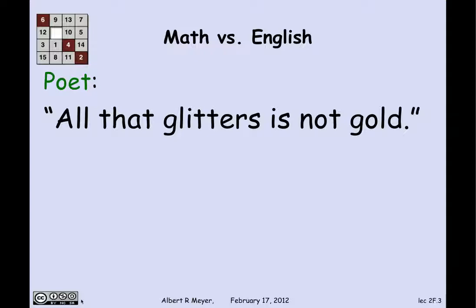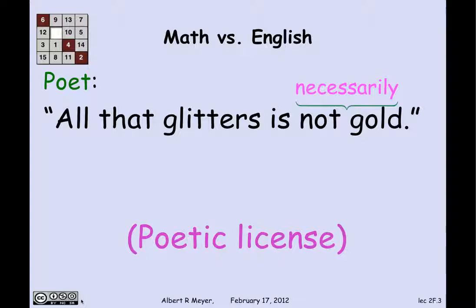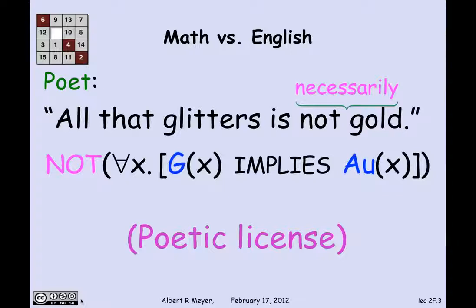What is actually meant? When the poet says "all that glitters is not gold," he's really leaving out a key word to be understood from context: "All that glitters is not necessarily gold." He's using poetic license — you're supposed to fill in and understand his meaning. The proper translation is that it is not true that everything that glitters is gold — it is not the case that for all x, if x glitters, then x is gold. It's an example where a literal translation, without thinking about what the sentence means and what the poet intended, gives you something that's nonsense.